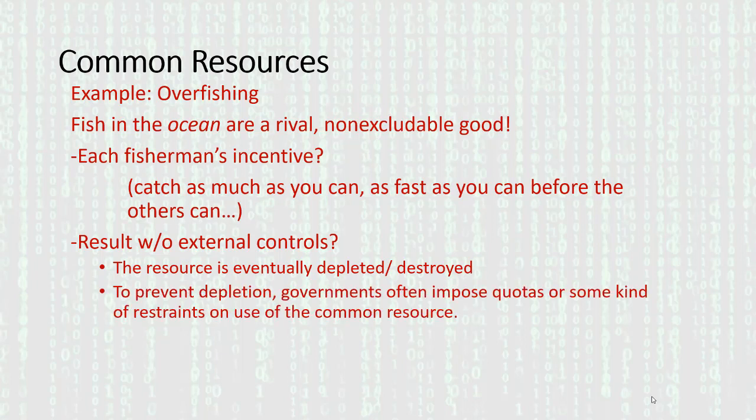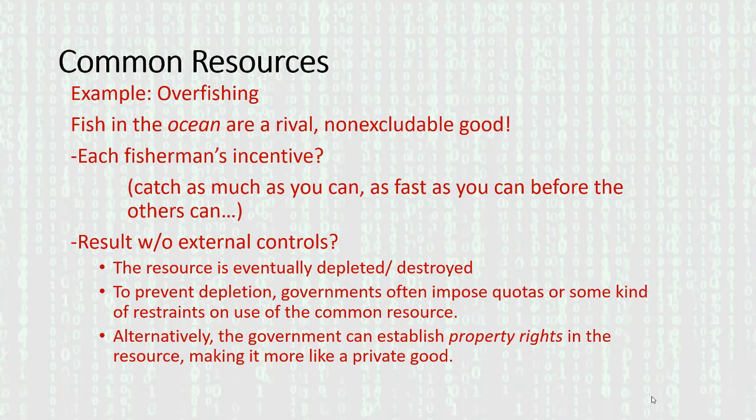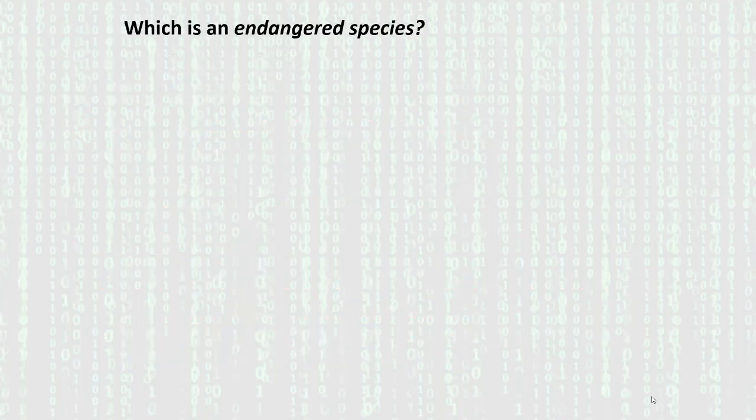To prevent depletion, governments seek to impose quotas or some kind of restraints on use of the common resource. But in certain cases, we're talking about parts of the world beyond the jurisdiction of any government. Alternatively, the government can establish property rights in that resource, thus making it more like a private good — and as I mentioned, sometimes that's possible, sometimes not so much.